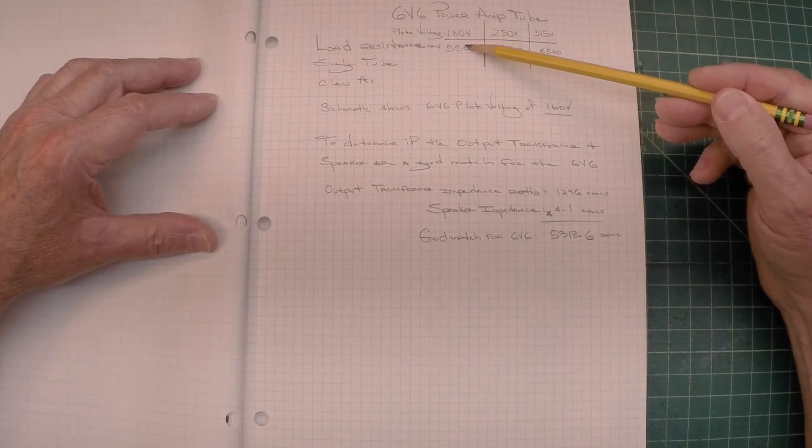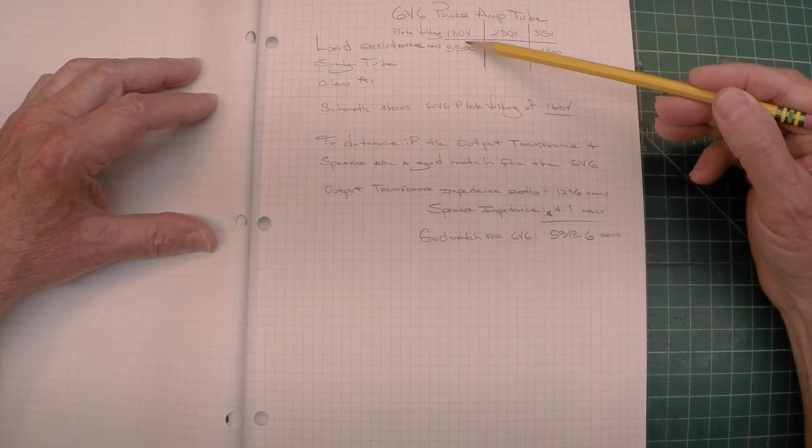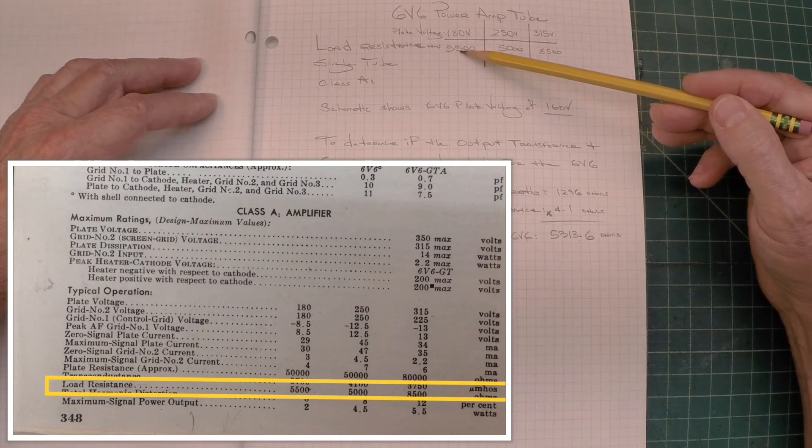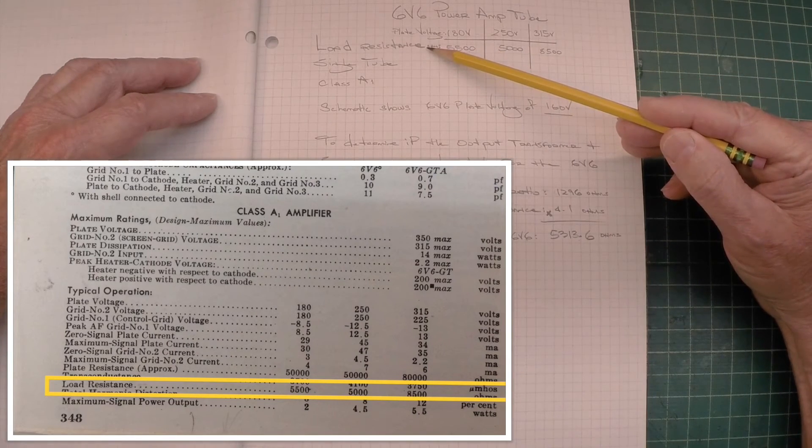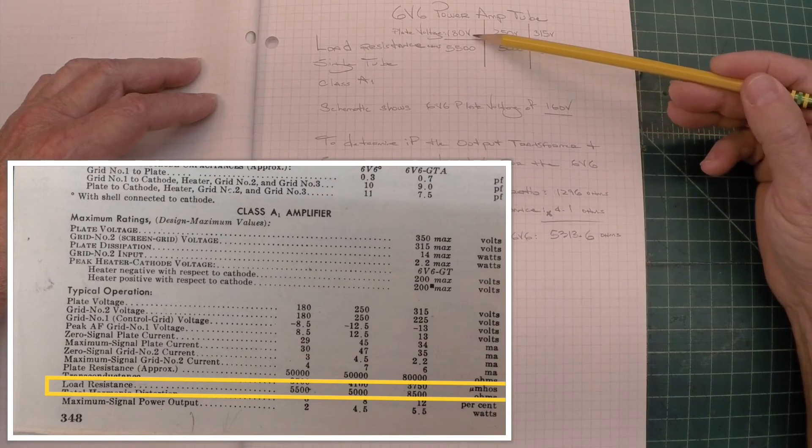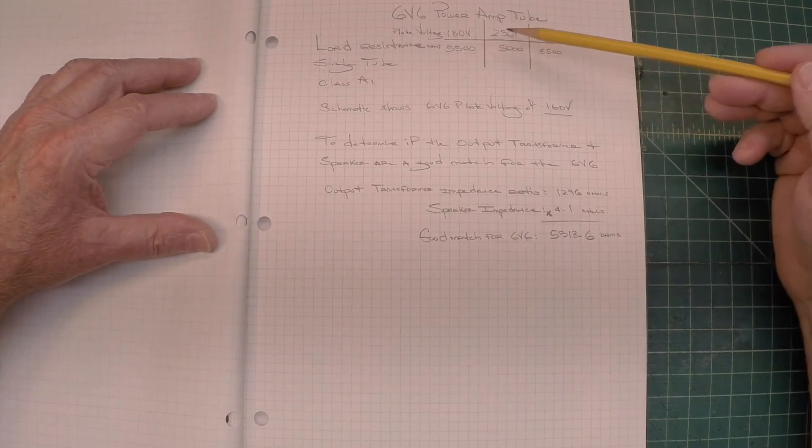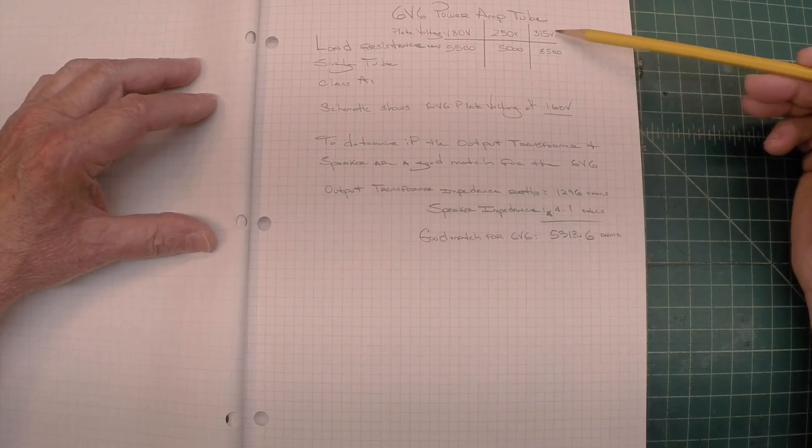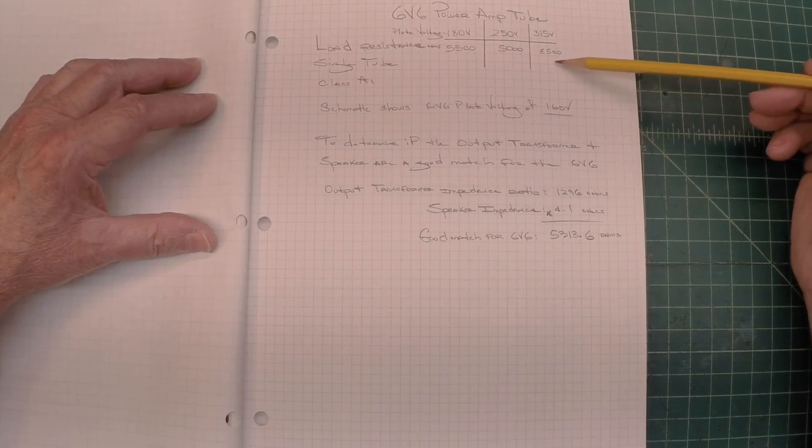If you look in the tube manual, and you can look at the picture-in-picture here, I'll show you just a sample out of a tube manual. Locate the load resistance, and you'll notice I wrote those down. Now, at 180 volts across the plate, 5500 ohms to 55,000, and we won't worry about the 315 here at 8500.